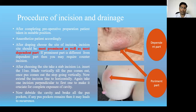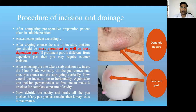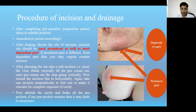Most outer abscesses can be drained under local anesthesia. Alternatively, if the abscess is very severe, very deep, and the patient cannot tolerate local anesthesia, then general anesthesia or spinal anesthesia may be required. Otherwise, local anesthesia is enough for drainage of most kinds of abscesses.